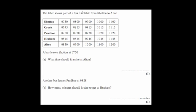Our last question uses a bus timetable from Shotton to Alton. Each column represents a different bus — bus one through bus five — each traveling from Shotton to Crook, to Prudhoe, to Hexham, to Alton. A bus leaves Shotton at 7:30 in the morning. Looking at that column, it arrives in Alton at 8:30.